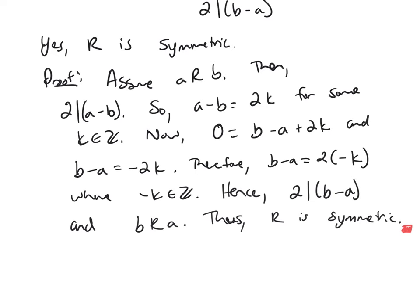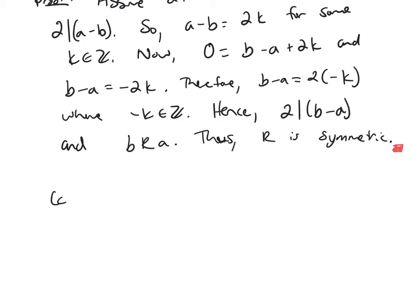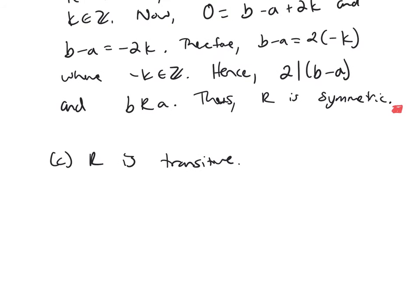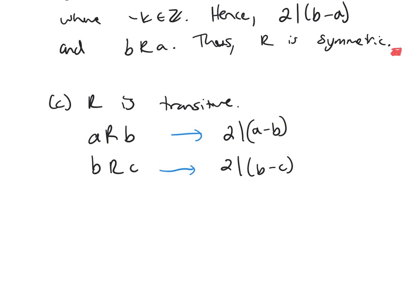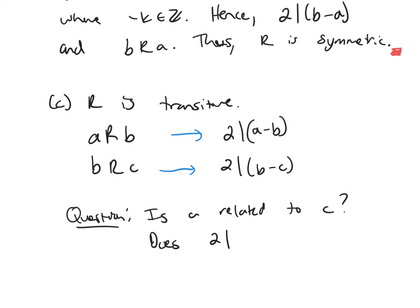Part C: prove or disprove R is transitive. Remember how transitivity works: assume A relates to B and B relates to C. Here, A relating to B means two divides A minus B, and two divides B minus C. The question becomes: does two divide A minus C?